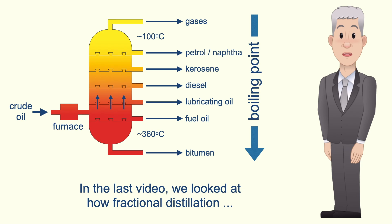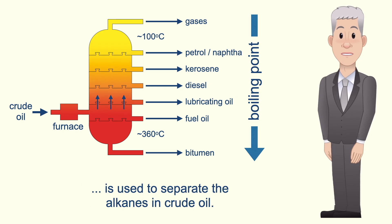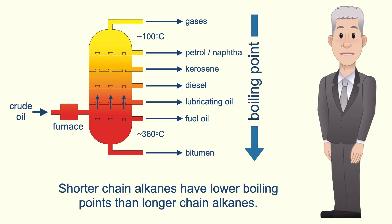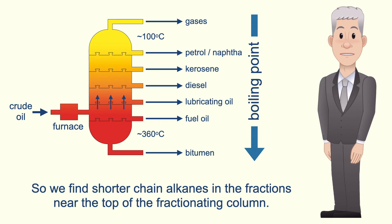In the last video we looked at how fractional distillation is used to separate the alkanes in crude oil. Remember that fractional distillation separates based on boiling point. Shorter chain alkanes have lower boiling points than longer chain alkanes, so we find shorter chain alkanes in the fractions near the top of the fractionating column.